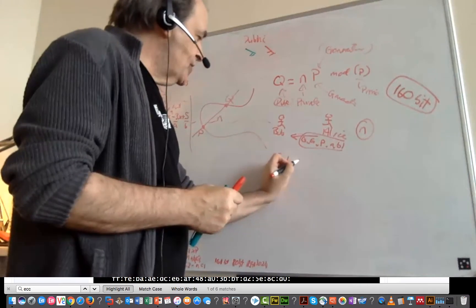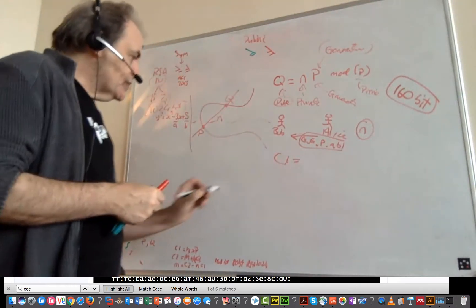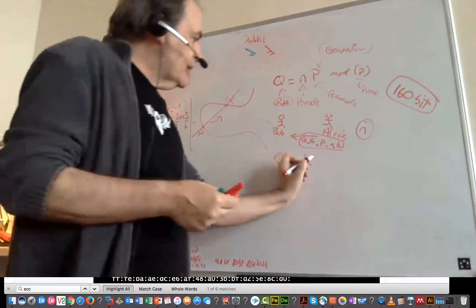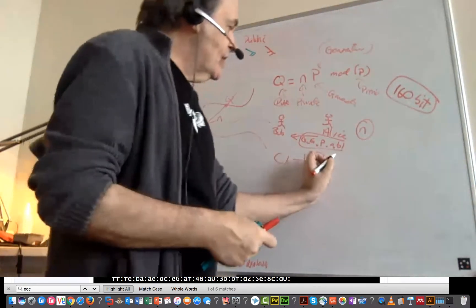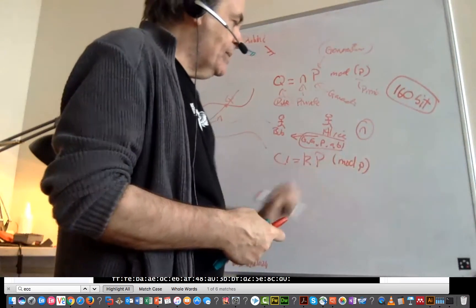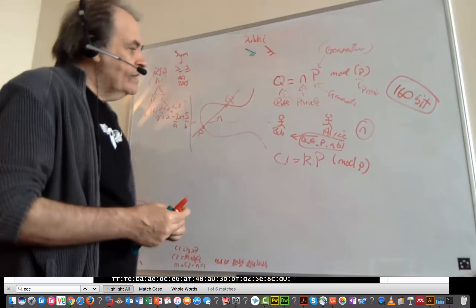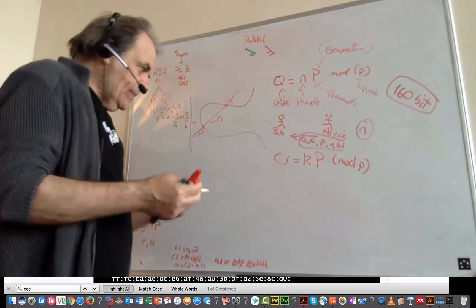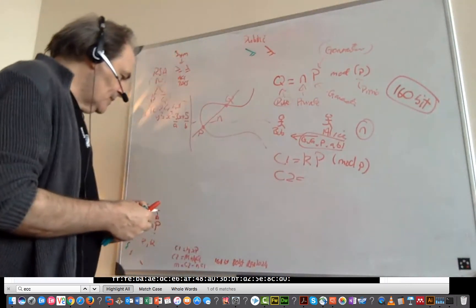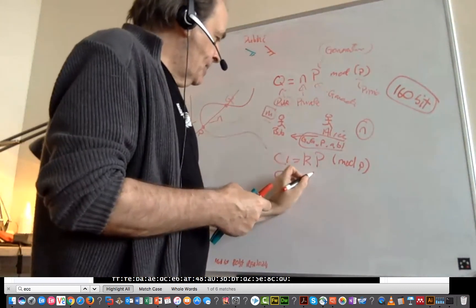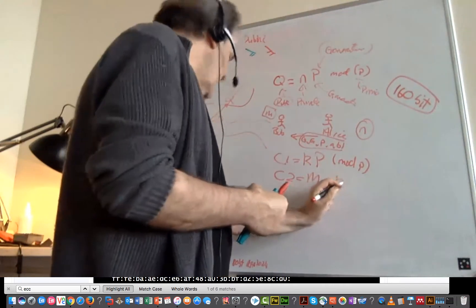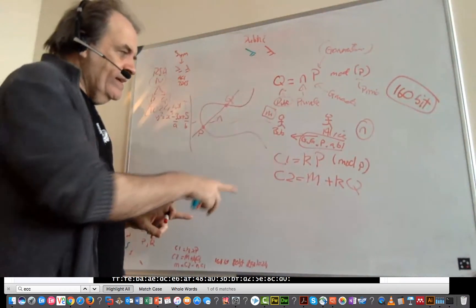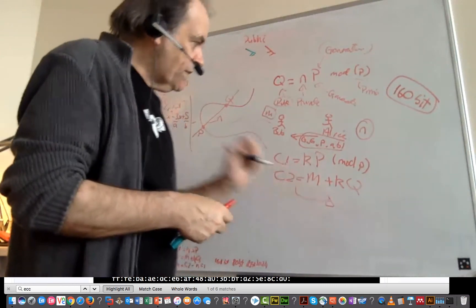Bob then takes the message and ciphers two different elements of it. He takes a random number, K, a nonce, a completely random number, and then multiplies it by P, the generator, and then also mod P. We bring in our prime number there and multiply them together and we'll get our first cipher. The next one, the second one, we'll take the message that he wants to send and then we'll add on K, the random number, times Q, the other part of the public key. So he then sends those two values over to Alice.